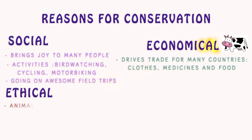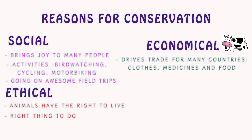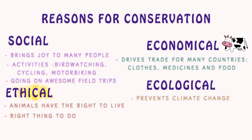Ethically, animals have the right to live, and some people believe that it is morally the right thing to do. Ecologically, ecosystems prevent the impact of climate change — for example, conserving trees that constantly use carbon dioxide will prevent an excess of this greenhouse gas in our atmosphere.